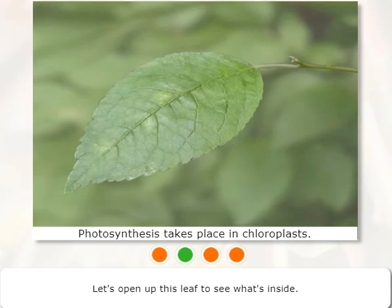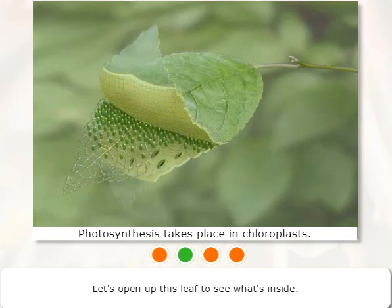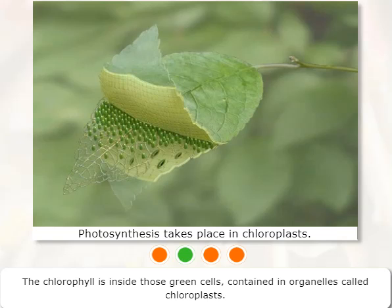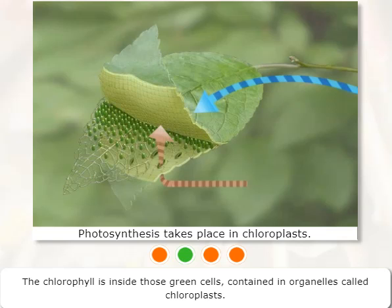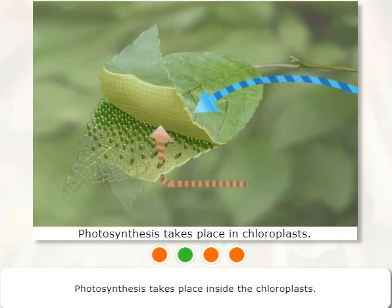Let's open up this leaf to see what's inside. The chlorophyll is inside those green cells, contained in organelles called chloroplasts. Photosynthesis takes place inside the chloroplasts.